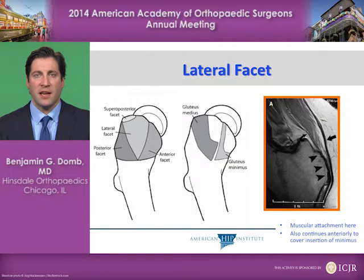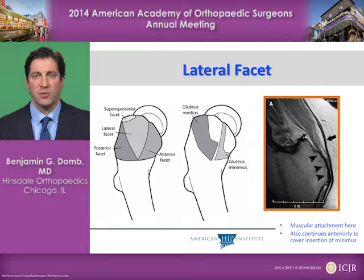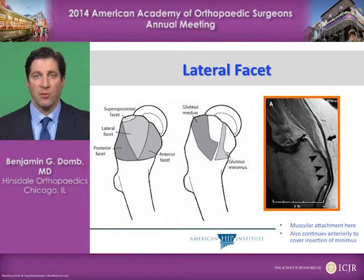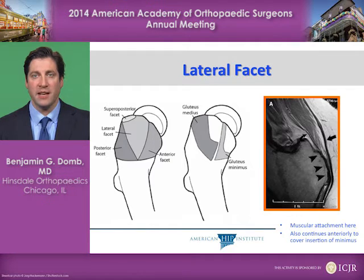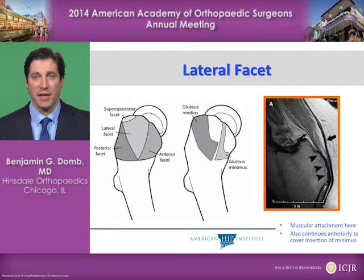The lateral facet, shown here in the coronal MRI, is the insertion of the thinner part of the gluteus medius, which is most commonly involved in tears. The three arrows mark the tendinous insertion on the lateral facet, and the larger arrow marks the iliotibial band, which runs directly over the lateral facet. It is important to discern between the IT band and the gluteus medius.